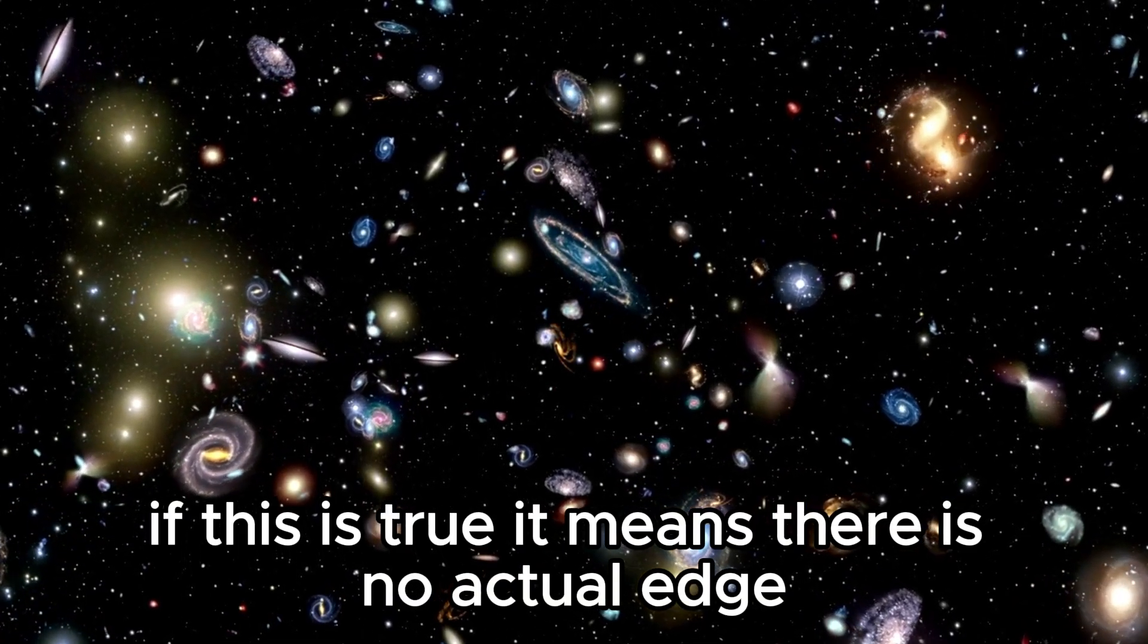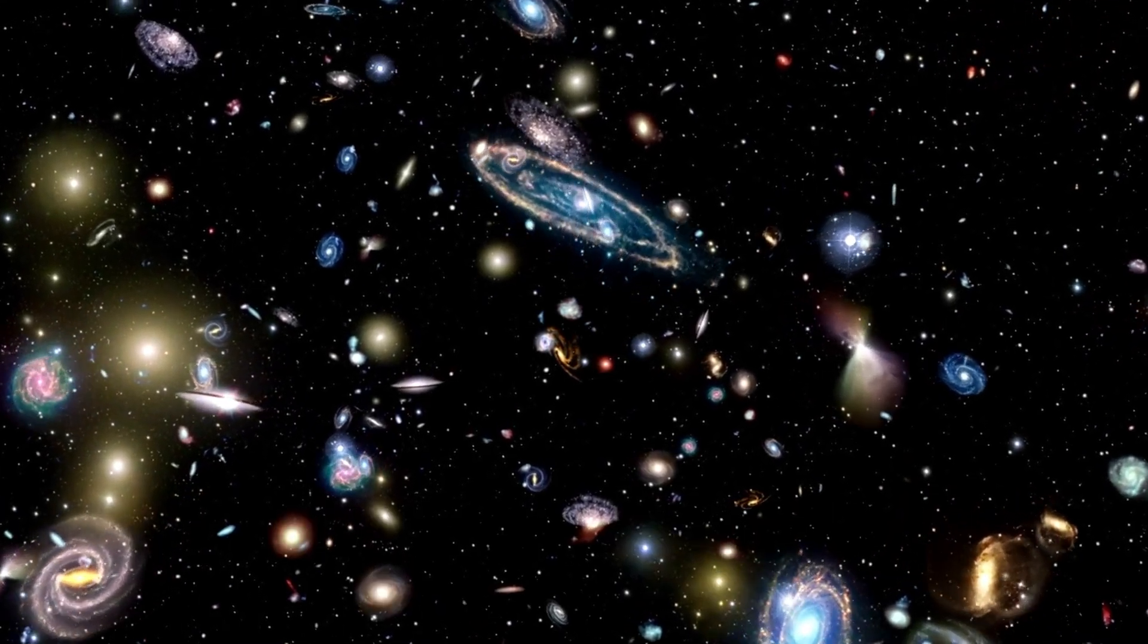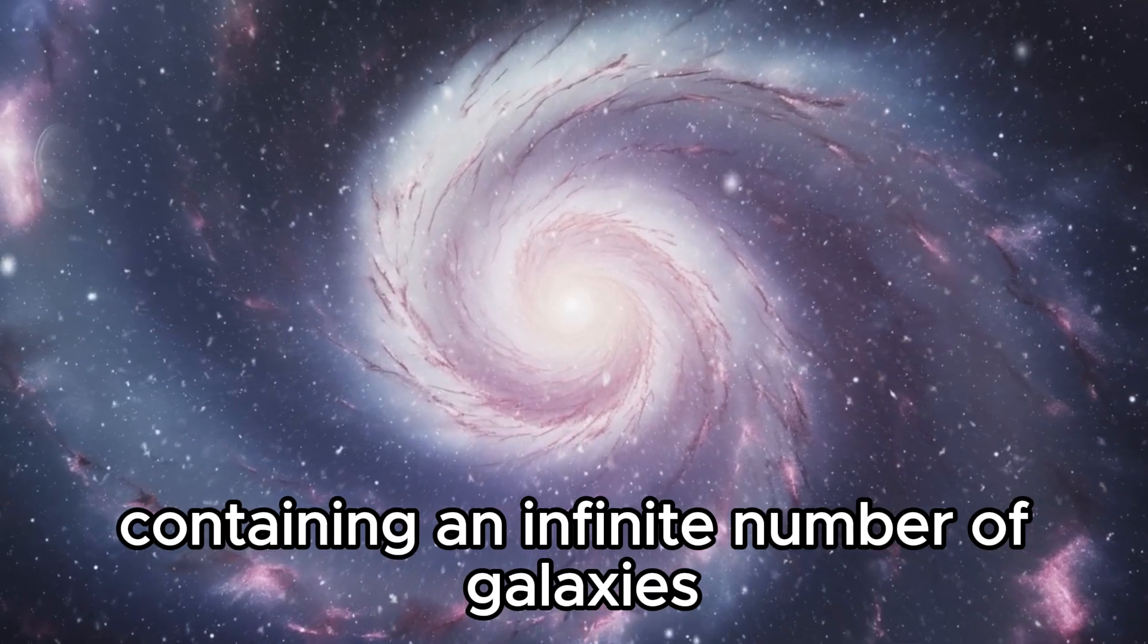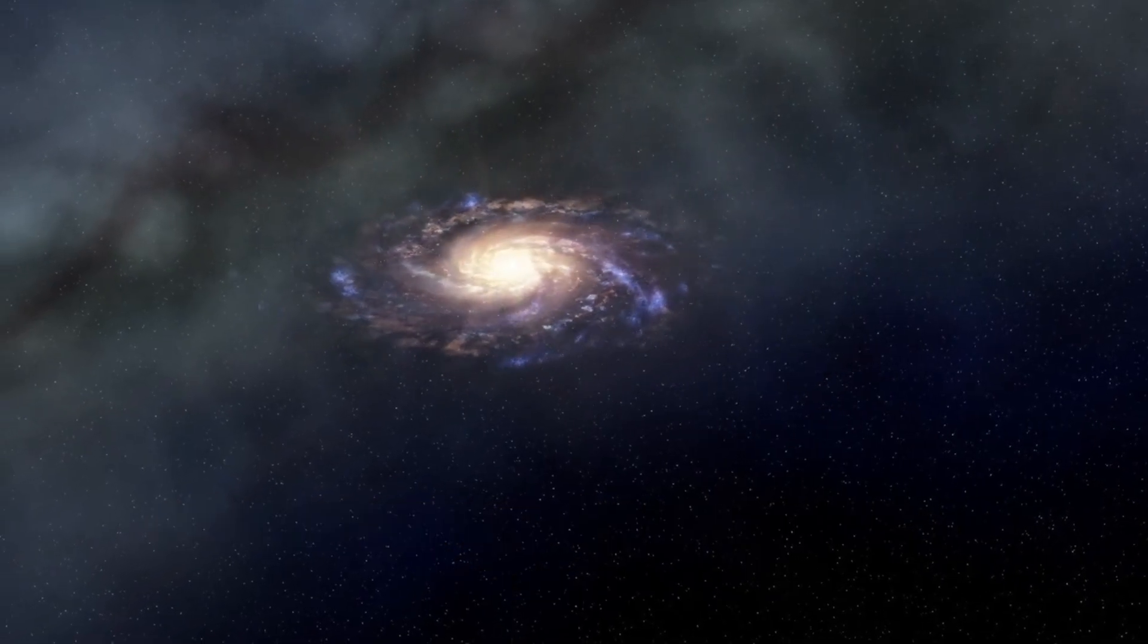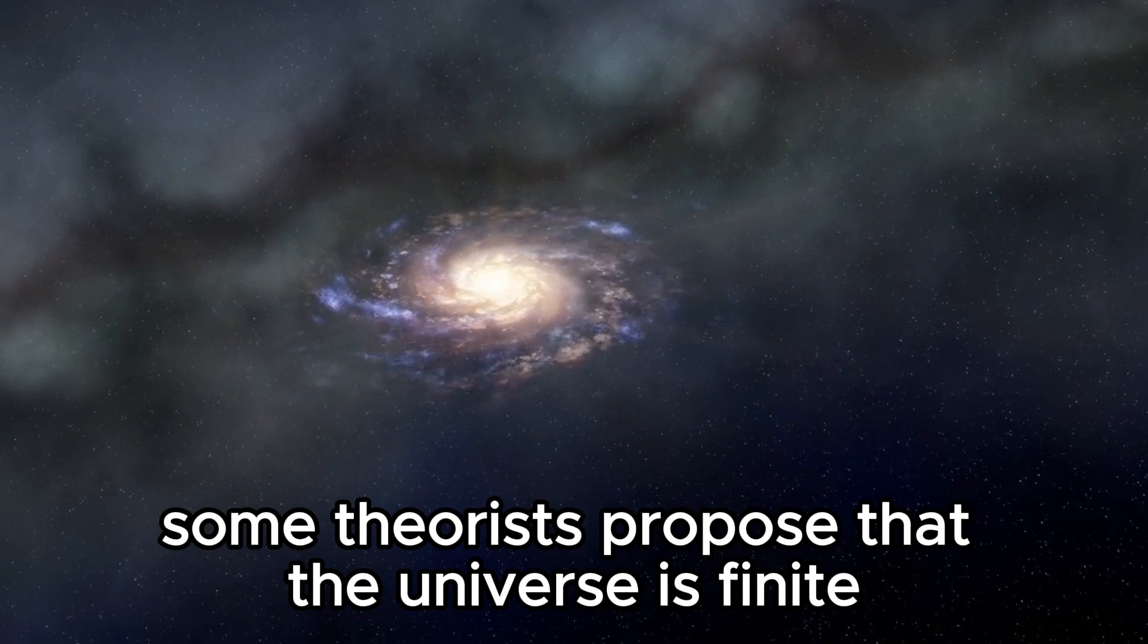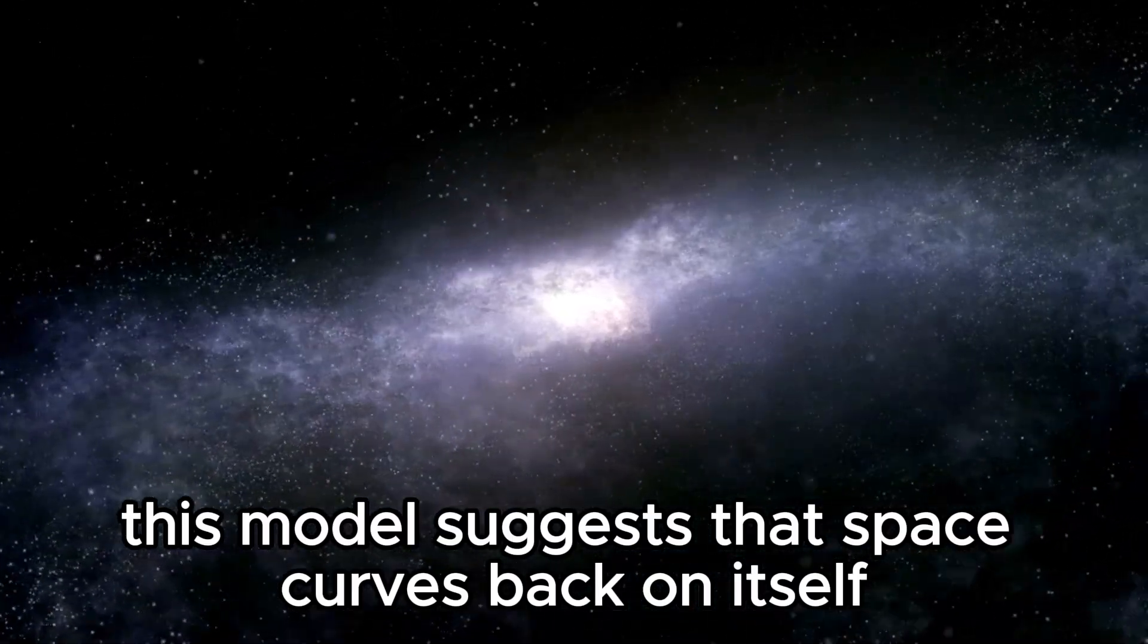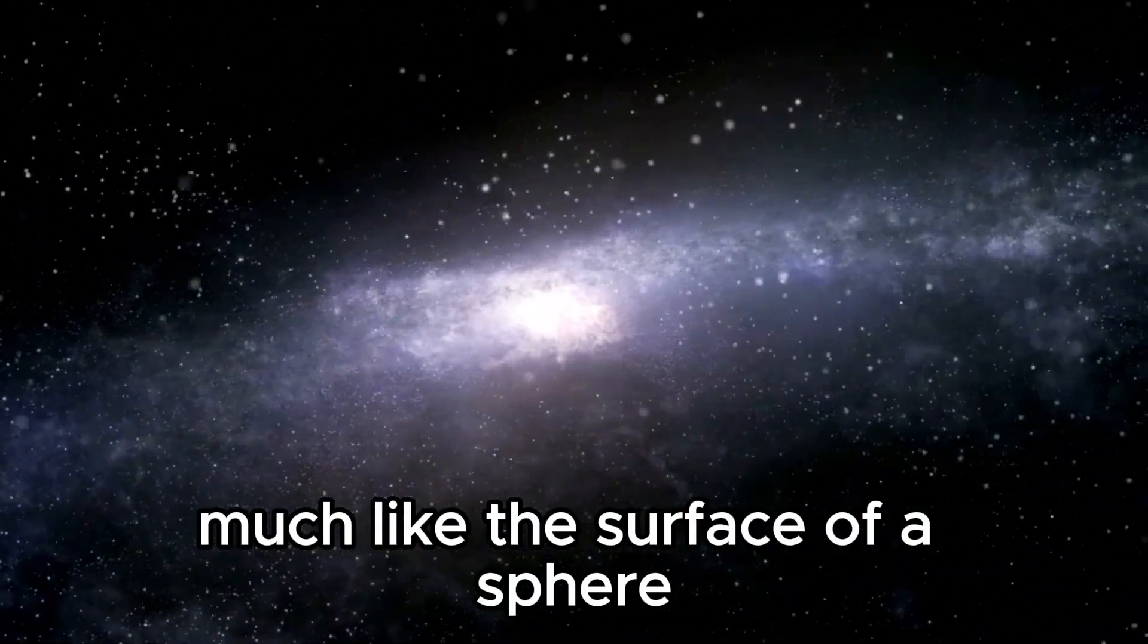If this is true, it means there is no actual edge in the way we might traditionally imagine. Space could extend endlessly, containing an infinite number of galaxies and celestial phenomena, all interwoven in the fabric of the cosmos. Alternatively, some theorists propose that the universe is finite but without any edges or boundaries. This model suggests that space curves back on itself, much like the surface of a sphere.